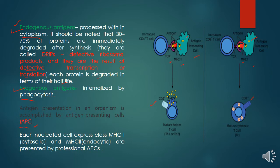Each nucleated cell expresses class MHC1, which is the cytosolic pathway. MHC2 is expressed by some specialized or professional antigen presenting cells, which I will cover in my next topic. Here I will cover only class MHC1, or the cytosolic pathway.